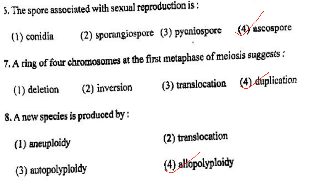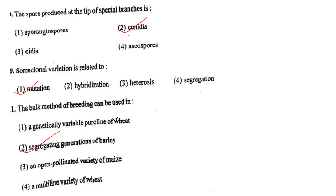Next one: A new species is produced by option 1, aneuploidy; option 2, translocation; option 3, autopolyploidy; option 4, allopolyploidy. Answer is option 4: allopolyploidy.